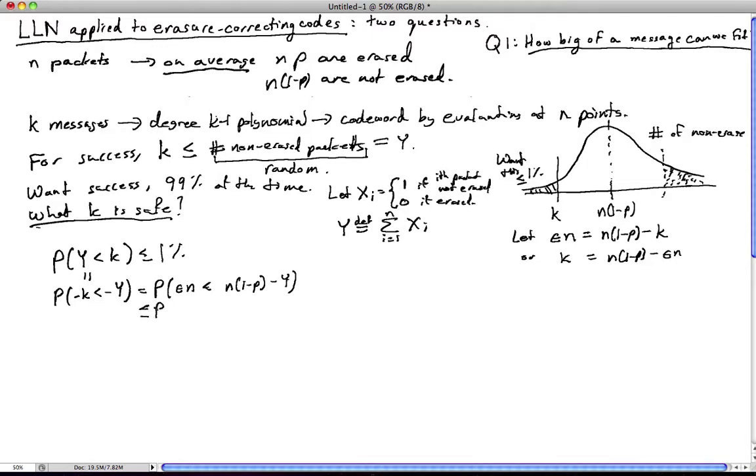This is clearly less than or equal to probability that epsilon n less than or equal to n times 1 minus p minus Y. Why is this clearly true? Because we've simply increased the size of this event. By increasing the size of this event, we've only increased the probability, and so we have an upper bound. And we're free to, of course, add in this other tail here, because that's only going to make this bigger.